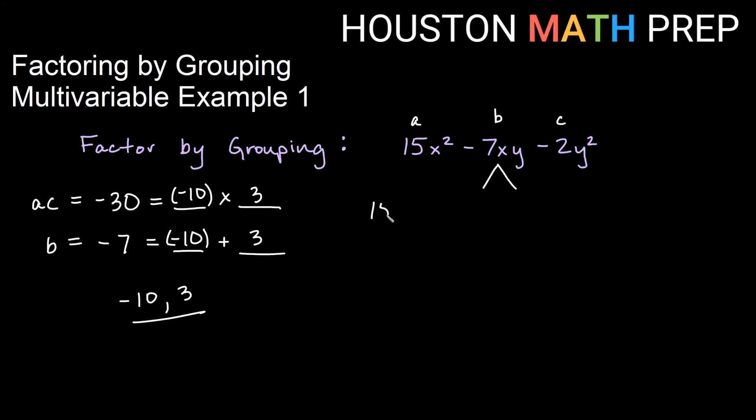So I keep my first term, and I regroup my xy term as two separate xy terms. Keeping it a like term would give me negative 10xy plus 3xy minus 2y squared stays the same.